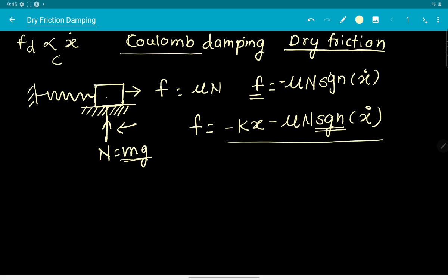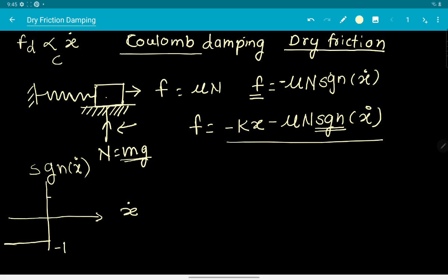Let me show how the signum function looks. If you plot sgn(ẋ) versus ẋ: when ẋ is negative, the function gives minus one, and when ẋ is positive, it gives plus one. At ẋ = 0 there is a discontinuity. So for all negative values of ẋ, you get −1 as output, and for positive ẋ, you get +1. This signum function is non-linear in nature.